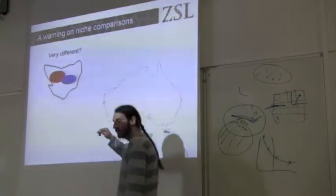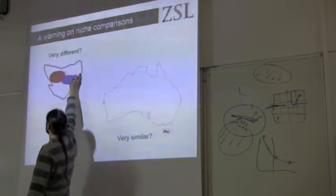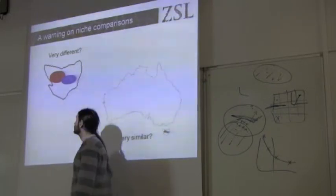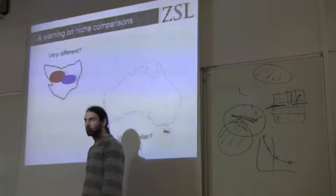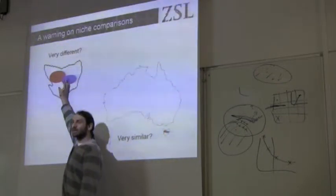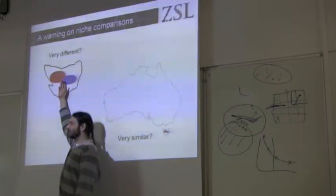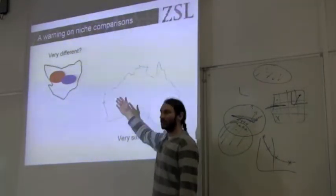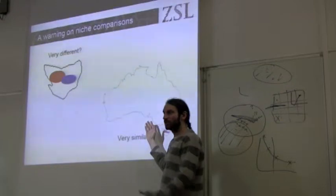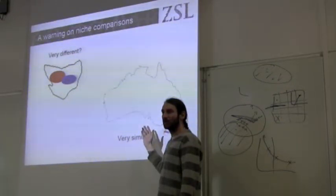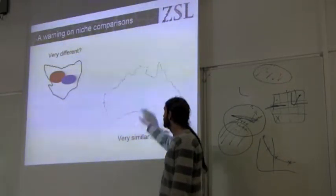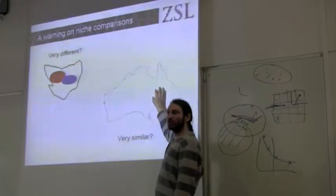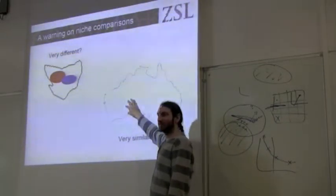If we were to use our test on this area, do you think the test would say this comes out as similar or different? Because most of the area, they disagree on presence or absence. What about if we consider this other area? They're going to be the same — they're going to be almost in the same area. All of this area, the two models agree that both species don't occur here.